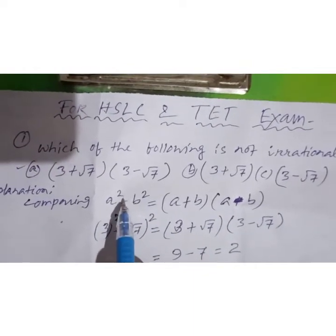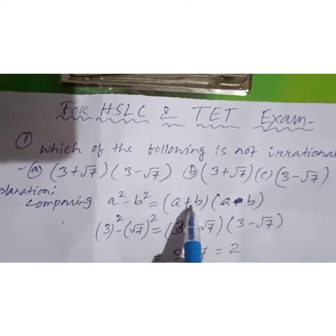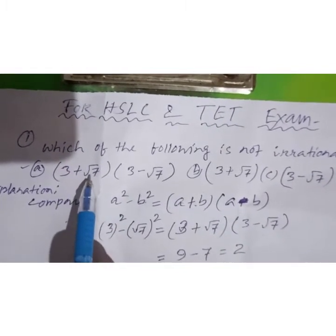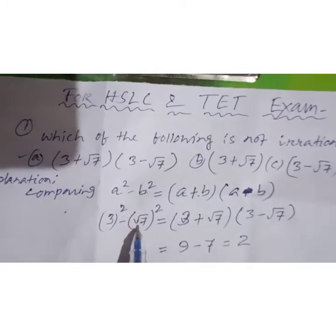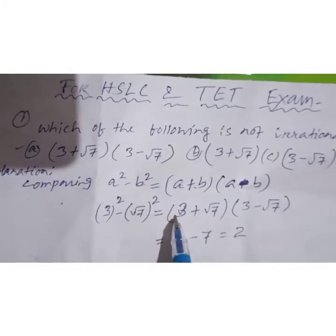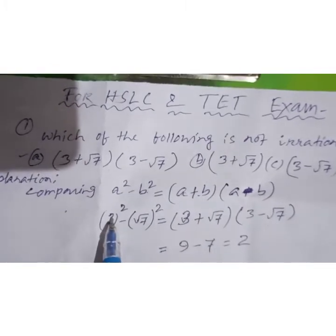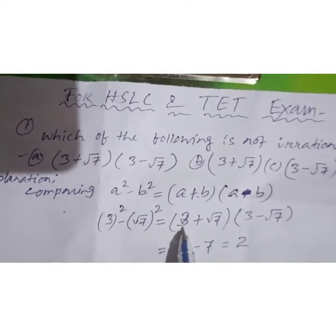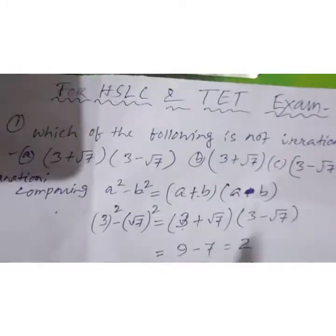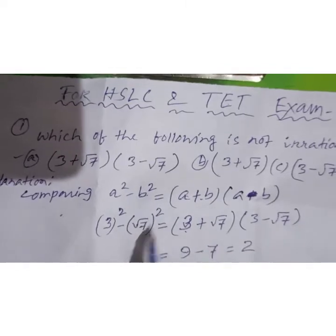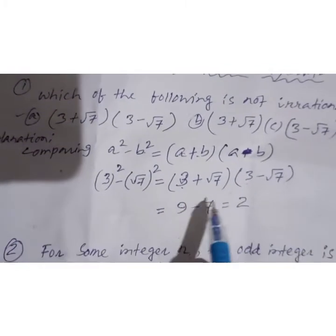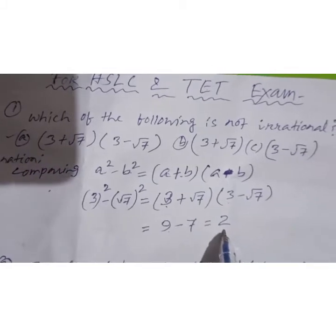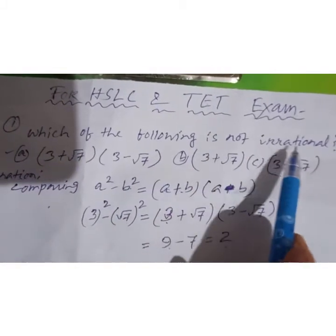For option (a), if we compare (3+√7)(3-√7) with the a²-b² formula, that is a plus b into a minus b, then a equals three and b equals root seven. So a²-b² gives three squared minus root seven squared, which equals 9 minus 7, giving us 2. This is not an irrational number. Since the question asks which is NOT irrational, option (a) is correct.